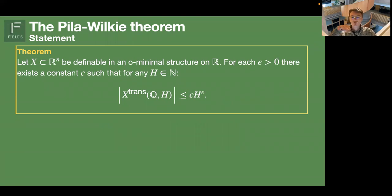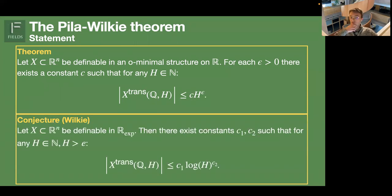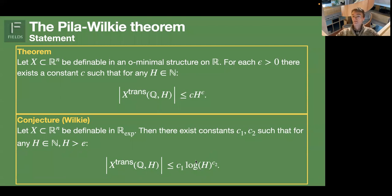Let me start with the Pila-Wilkie theorem, in exactly the same form as Garrett presented it this morning. If you have some definable sets in an o-minimal structure of R, you throw away all infinite semi-algebraic sets contained in X, and what remains is called the transcendental part of X, and we try to count rational points on it. The theorem gives an upper bound on this number of rational points. There is a sharper version in the particular case that X is definable in the o-minimal structure R_exp, where the upper bound improves to a polynomial in log H — H being the height of the rational points.